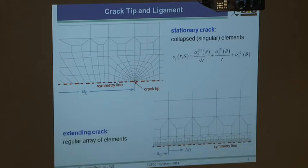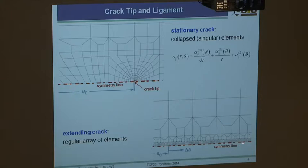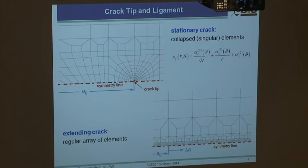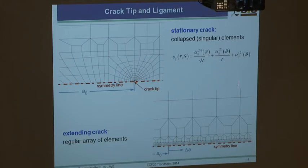If the crack is extending - by node release, cohesive elements, damage model, or whatever - you cannot use collapsed elements because you need a regular arrangement so the crack tip always meets the same conditions. Use quadratic square elements along the crack line. The stresses immediately at the crack tip in the first one or two elements will not be very reliable, so don't depend on them. This is meant to model crack extension by J-controlled node release, cohesive elements, or similar.